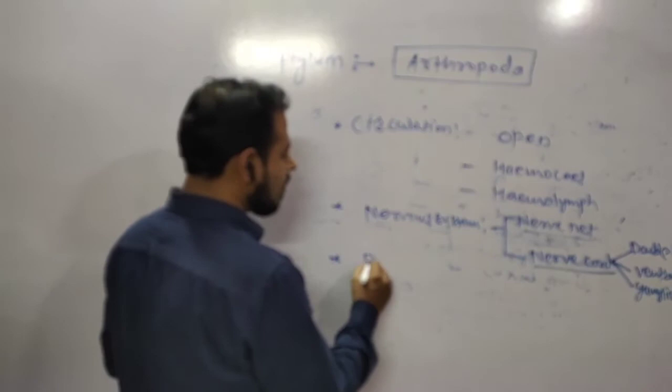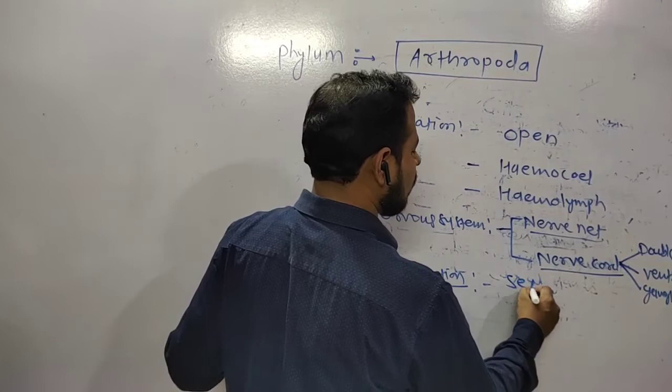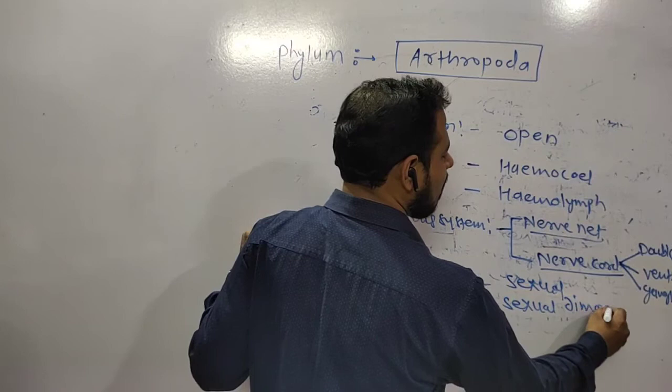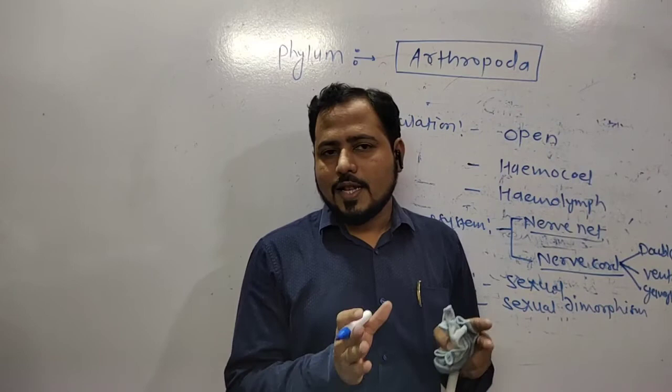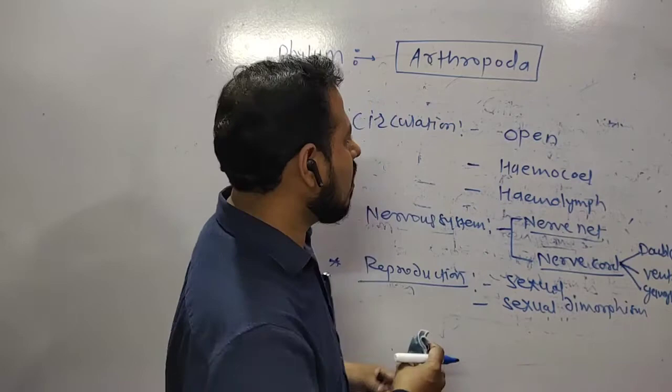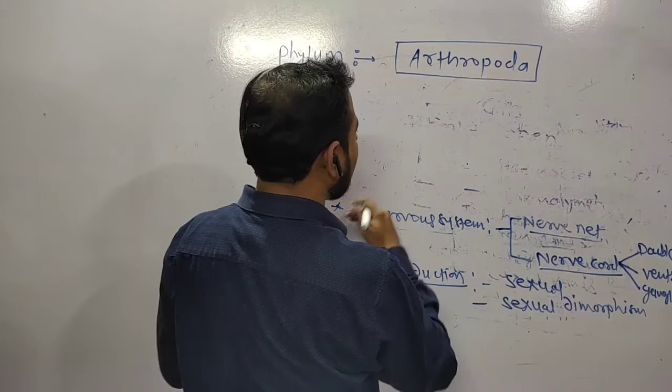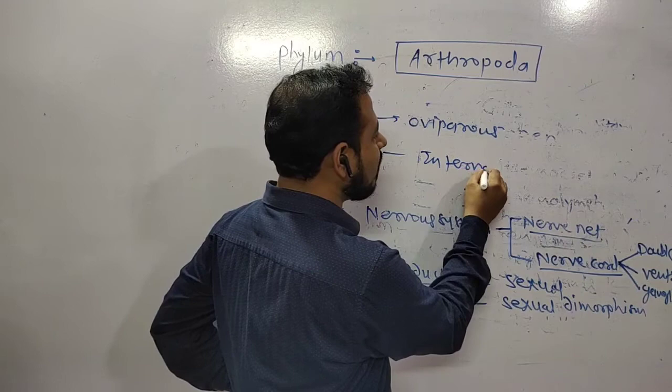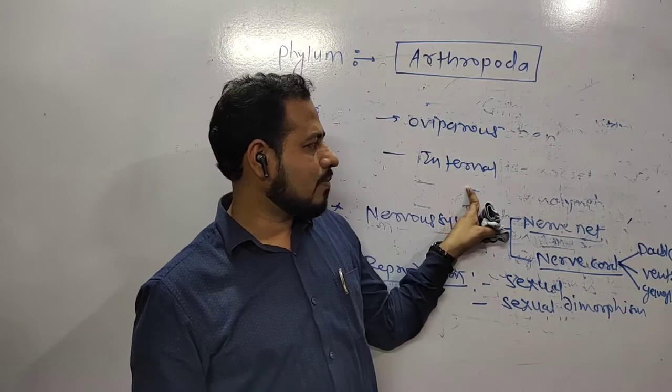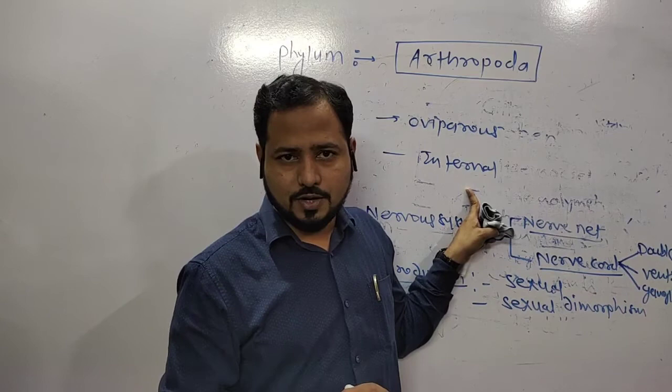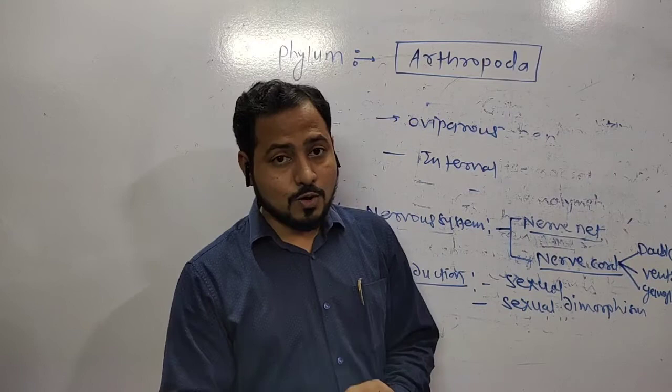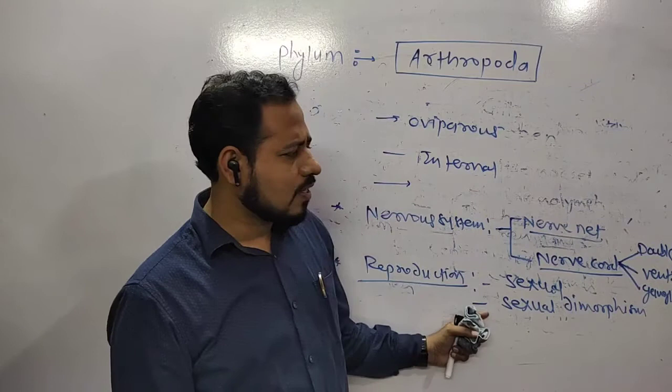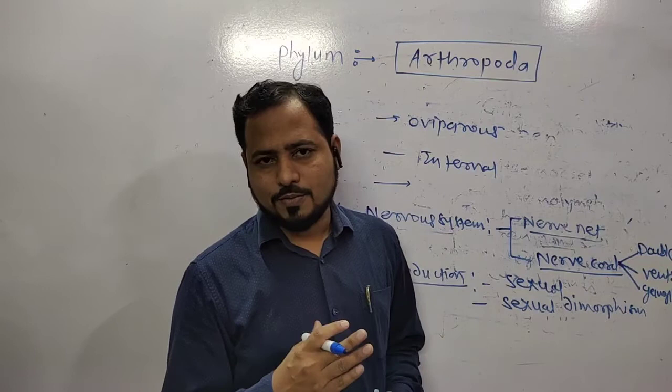Let's talk about reproduction, the reproductive system. Of course sexual, and sexual dimorphism. This means male and female animals are different - males are different, females are different. That is called sexual dimorphism in arthropods. These animals are egg-laying, this means oviparous animals. Fertilization is internal.